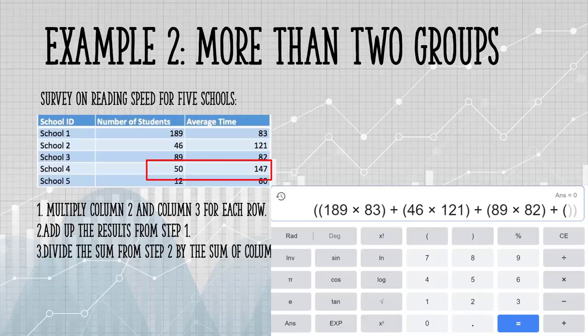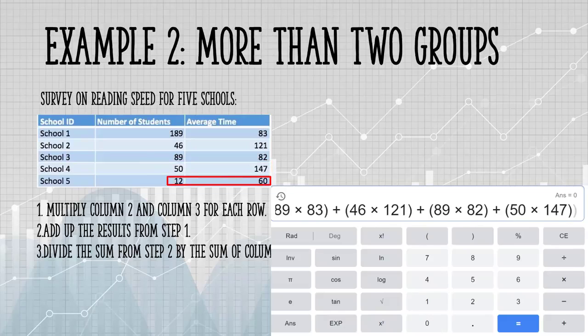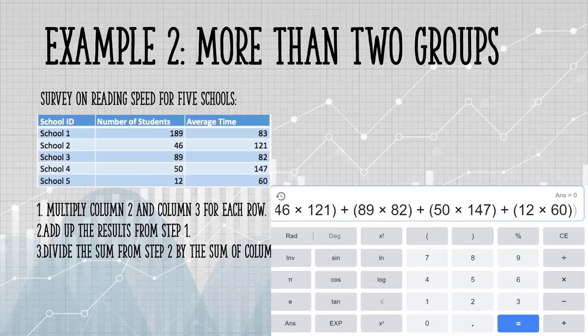Plus 50 times 147, and 12 times 60. I've put in an extra set of parentheses here to total that all up, and I'm going to divide that...